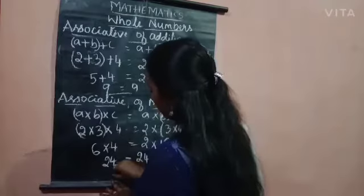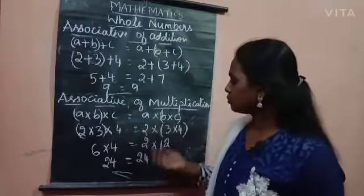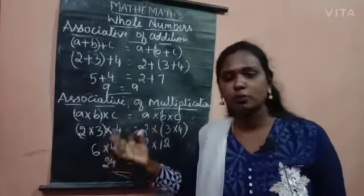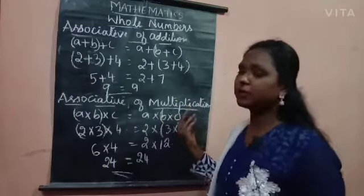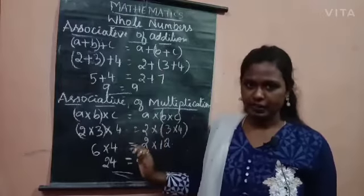So both sides we got the same answer. So we come to a conclusion that associative property of addition and multiplication both are satisfied. I hope you understood this topic.